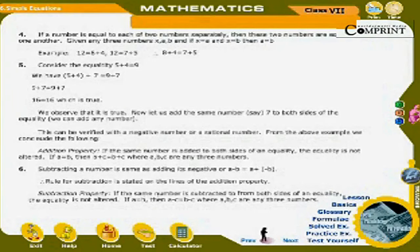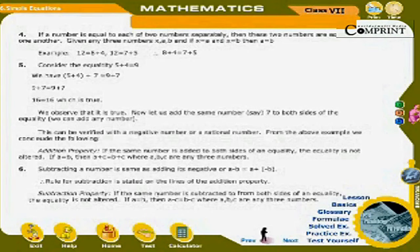4. If a number is equal to each of two numbers separately, then those two numbers are equal to one another. Given any three numbers x, a, b: if x = a and x = b, then a = b. For example, 12 = 8 + 4 and 12 = 7 + 5, therefore 8 + 4 = 7 + 5.